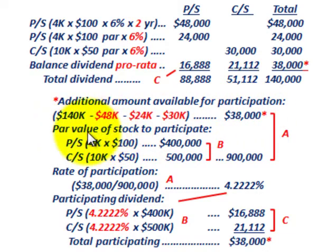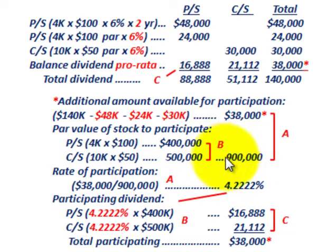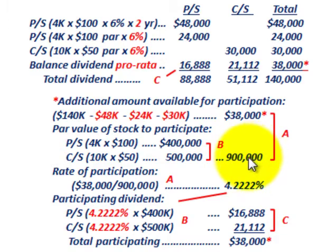Now we're going to base this allocation on the par value of the stock participating. We need the par value for both preferred and common stock. For preferred stock: 4,000 shares times $100 par equals $400,000. For common stock: 10,000 shares times $50 par equals $500,000. Adding the total par amounts together: $400,000 plus $500,000 gives us $900,000. Knowing the $38,000 available and the $900,000 total par value, we can determine what they call the rate of participation.